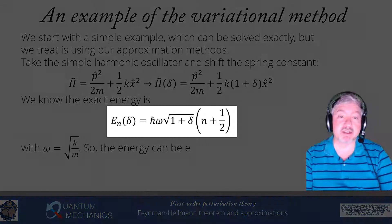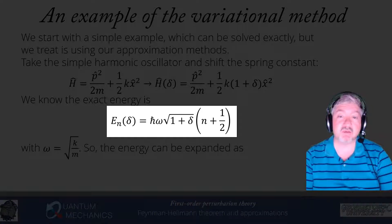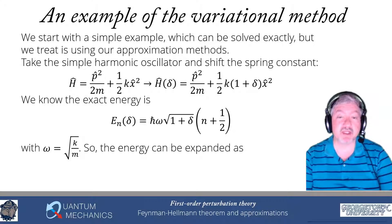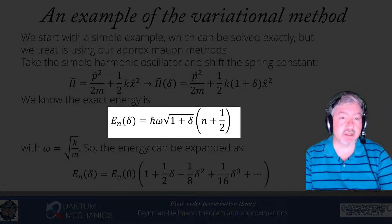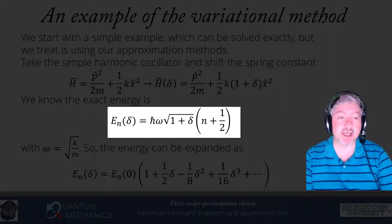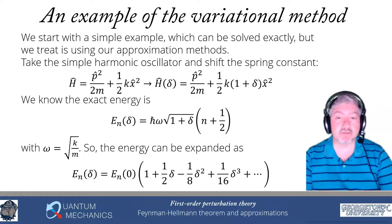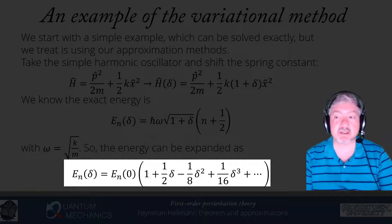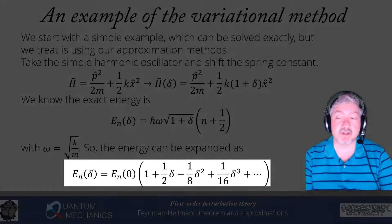The exact energy we know: it's h-bar omega times the square root of k times (1 plus delta) divided by m. Since the square root of k over m is omega, we get h-bar omega times the square root of (1 plus delta) times (n plus one-half). These are all possible energy eigenvalues. If we expand the square root of (1 plus delta) in a Taylor series, we find that E_n(delta) equals E_n(0) times (1 plus one-half delta minus one-eighth delta squared plus one-sixteenth delta cubed and so forth). The expansion has an infinite number of terms.